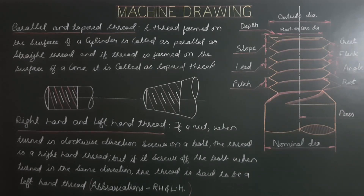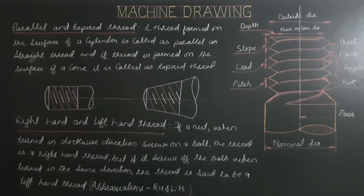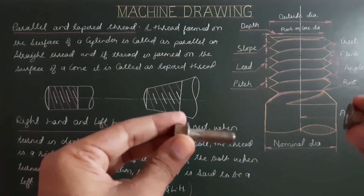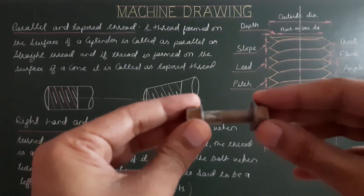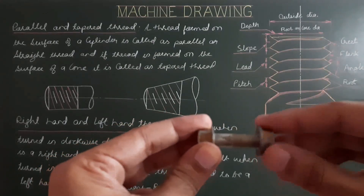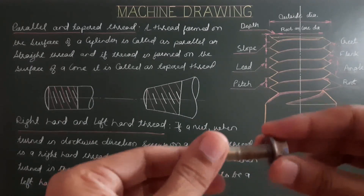If a nut, when turned in the clockwise direction, screws onto a bolt, the thread is a right-hand thread. But if it screws off the bolt when turned in the same direction, the thread is a left-hand thread. Abbreviations: RH for right-hand thread, LH for left-hand thread. Hold the bolt in your left hand and rotate the nut clockwise with your right hand — if it screws on, it is a right-hand thread; if it screws off, it is a left-hand thread.